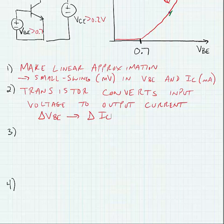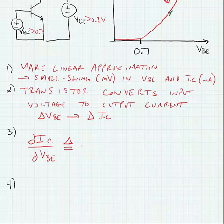So we're going to define our transconductance, which is the ratio of the change in collector current relative to the change in base-to-emitter voltage: dIC by dVBE. We define this as the gm of the transistor.